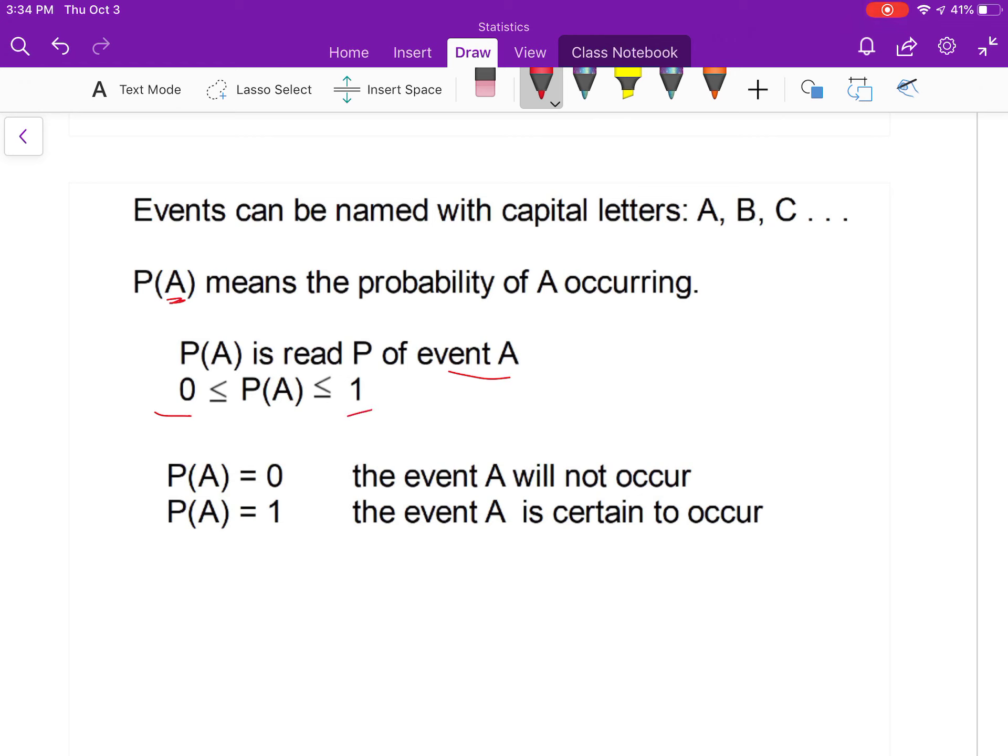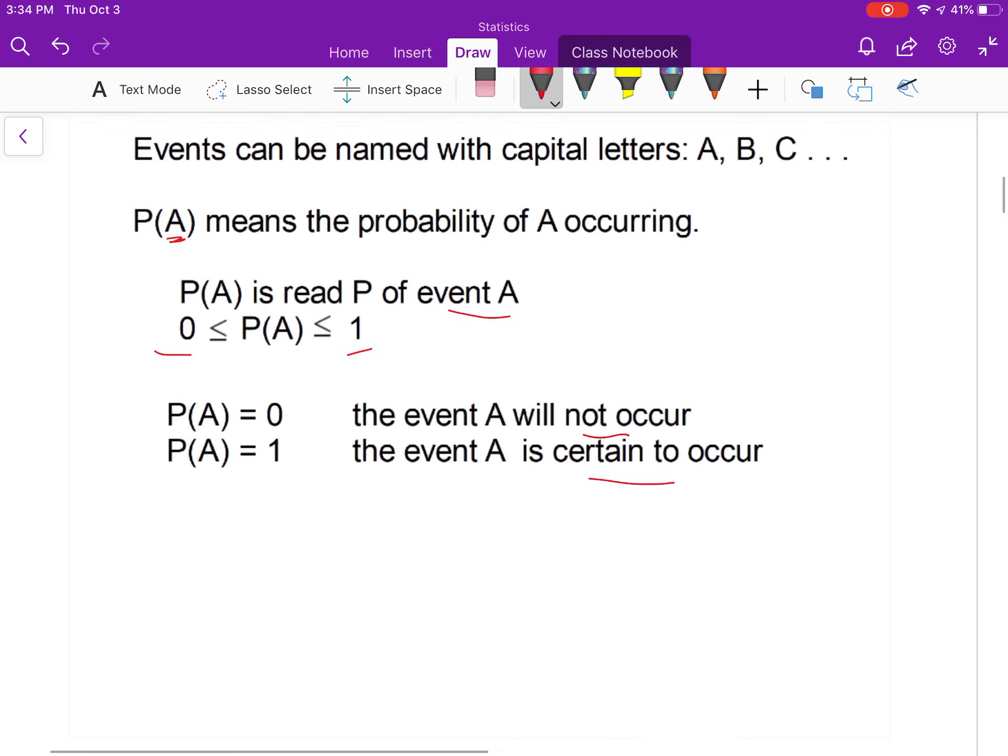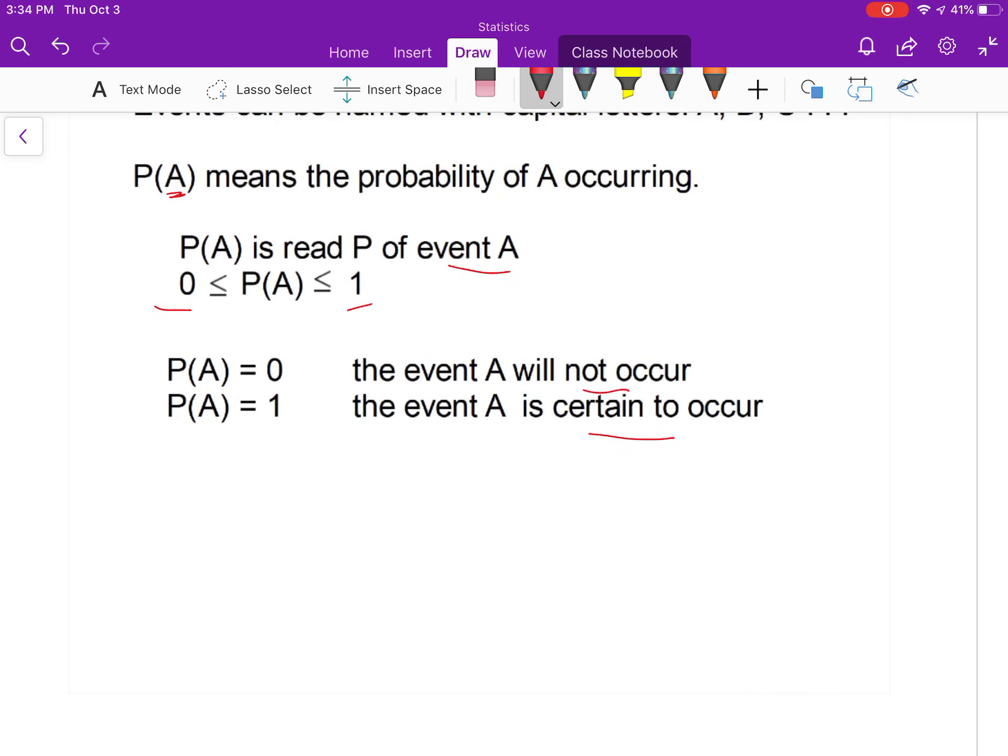If the probability of A is 0, it means that A will not occur. If the probability of A equals 1, it means A is certain to occur. I use the event inside of the parentheses, so for flipping a coin, the probability of getting heads would read like that: probability of heads or probability of tails, depending on what's favorable.